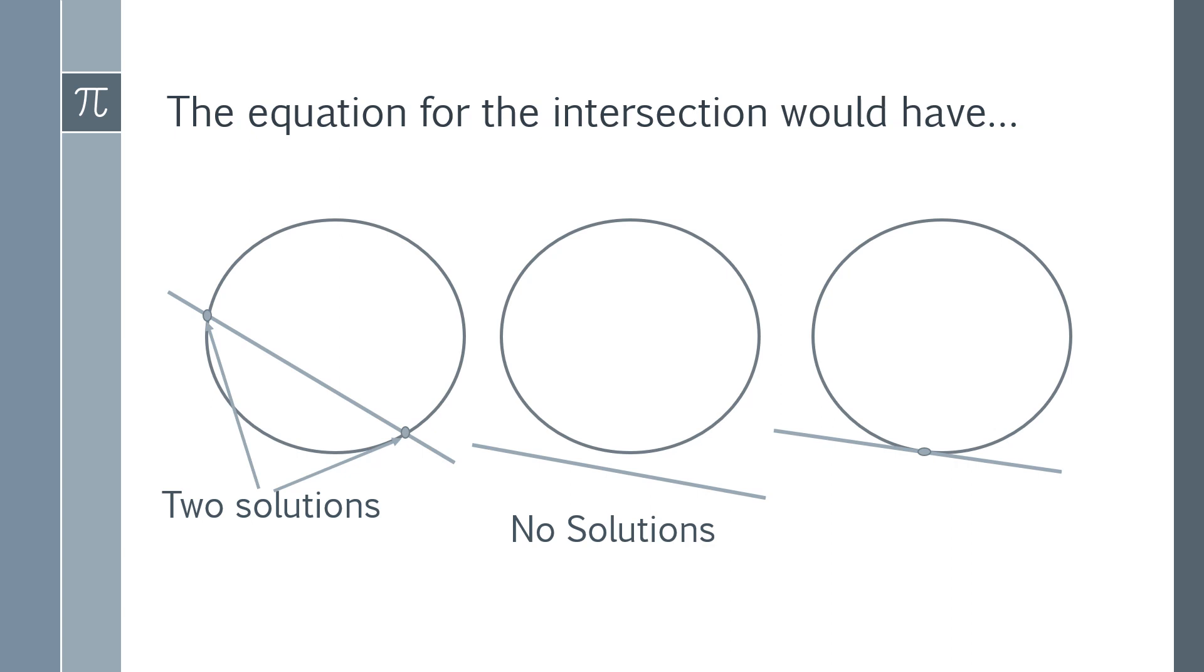If it doesn't touch the circle at all, if you try and make an equation for the intersection and solve it, it'll come up with no solutions because those two equations don't ever intersect. Or in the case where you do have a tangent, when you have an equation for the intersection you will find exactly one solution. So this is the theoretical underpinning.